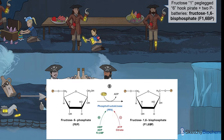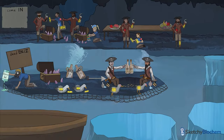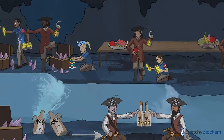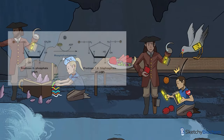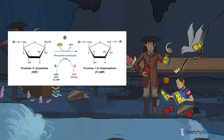Step 3 is a key rate-determining step in glycolysis. Let's mention how PFK1 is regulated. First off, ATP and citrate are allosteric inhibitors of PFK1. ATP, a product of glycolysis, provides negative feedback into the pathway at this point.